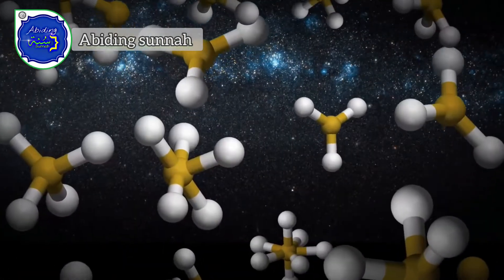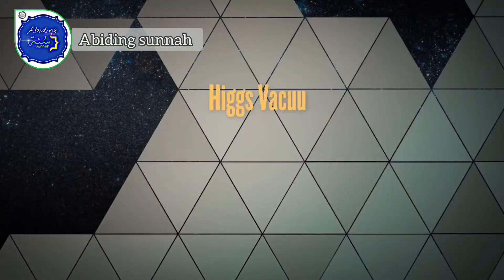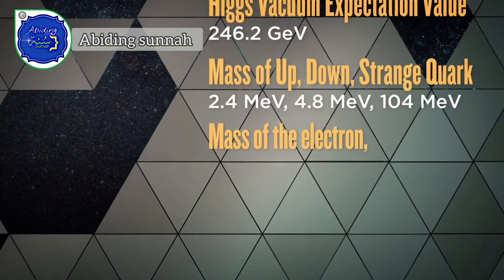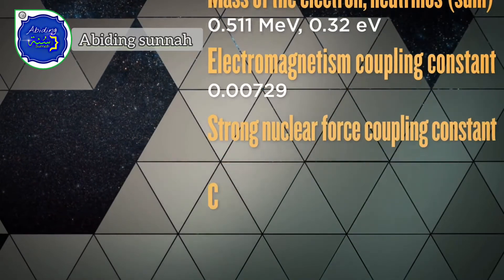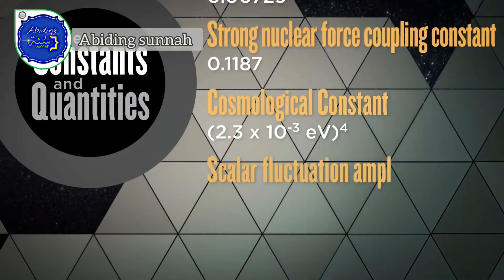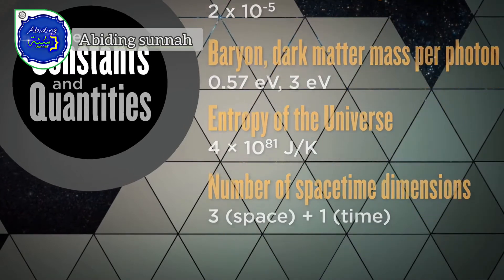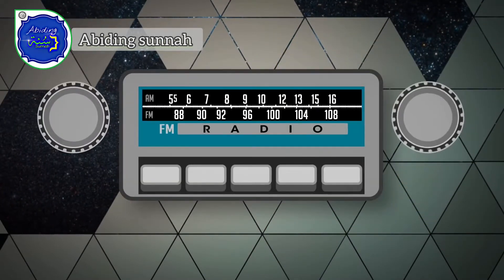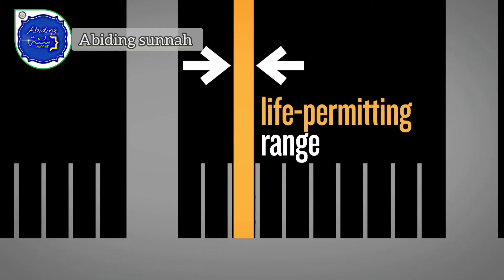From galaxies and stars down to atoms and subatomic particles, the very structure of our universe is determined by these numbers — the fundamental constants and quantities of the universe. Scientists have come to the shocking realization that each of these numbers has been carefully dialed to an astonishingly precise value, a value that falls within an exceedingly narrow, life-permitting range.